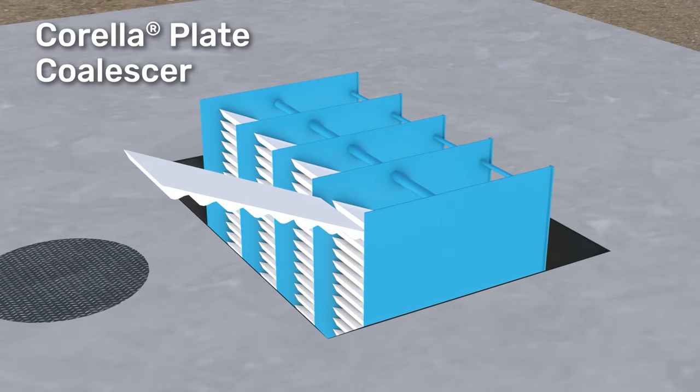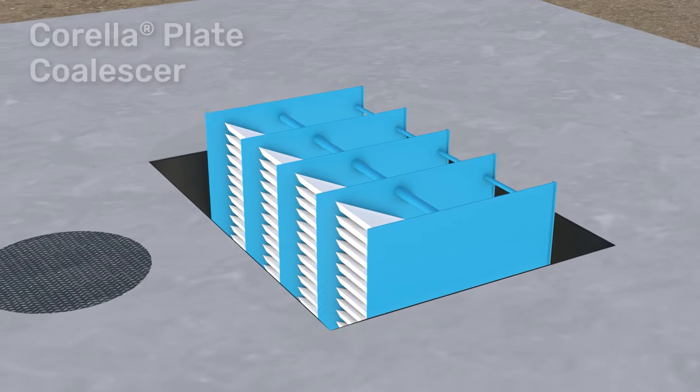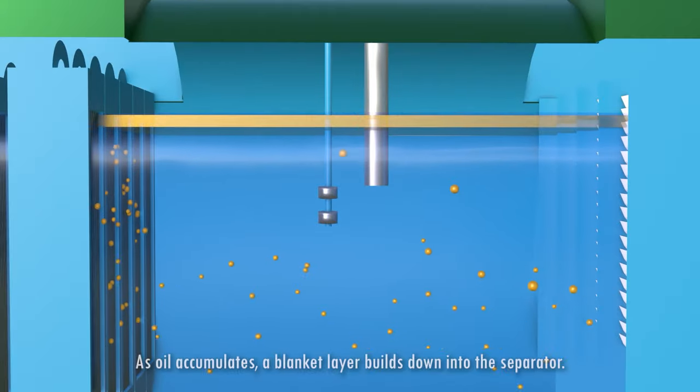We're showing an easy access manway so the coalescer is going to be pulled out and inspected, and again oil is accumulating on top of the water.